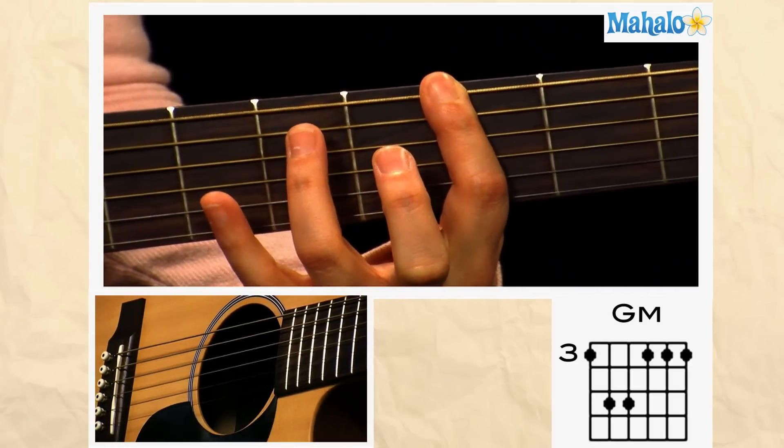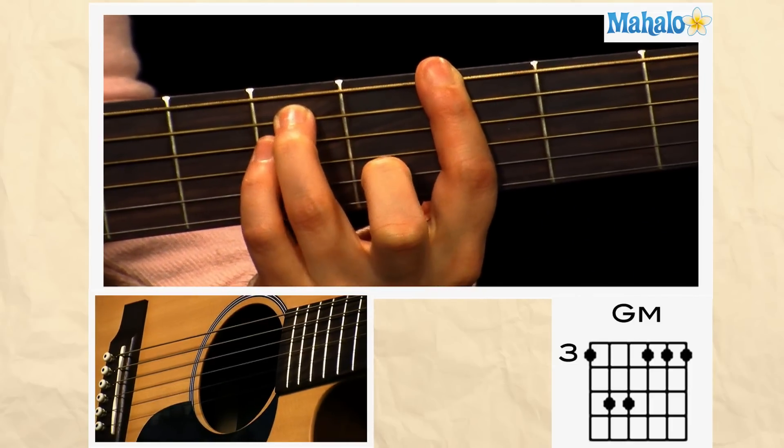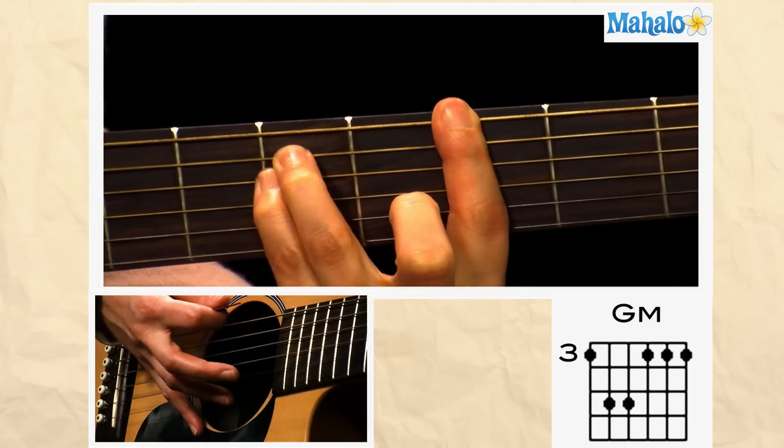Then take your third finger and place it on the fifth fret of the A string. Take your fourth finger and place it on the fifth fret of the D string, and strum all six strings.